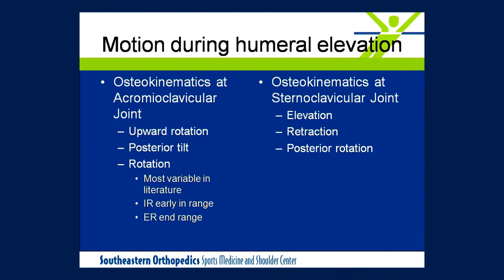At the acromioclavicular and the sternoclavicular joints, these provide accessory motions during humeral elevation. At the AC joint, we have upward rotation, posterior tilt, and both internal and external rotation. Values in the literature are a little bit variable with respect to rotation. Initially there's some internal scapular rotation, and then as the arm is elevated, external rotation takes over — in particular after 90 degrees of elevation, there's more external rotation. At the SC joint, the clavicle actually elevates, retracts, and posteriorly rotates as the arm is being elevated.